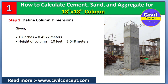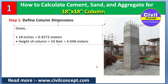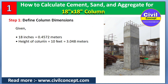First of all, we have to define the column dimension, which I have taken as 18 inch by 18 inch. If we convert 18 inches into meters, we get 0.4572 meters. So all dimensions have been converted into meters. This column is 18 inch along one side, 18 inch along the other side, and the height of the column I have taken is 10 feet, which equals 3.048 meters.